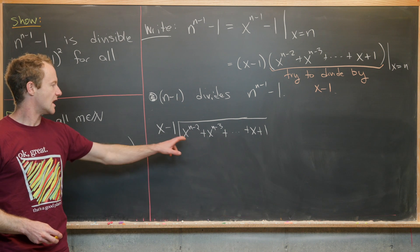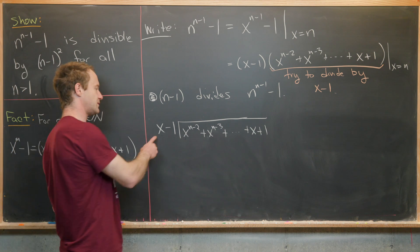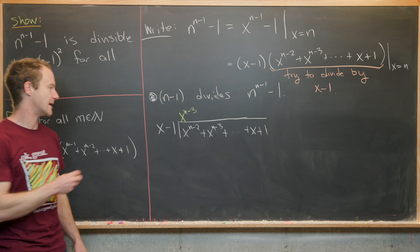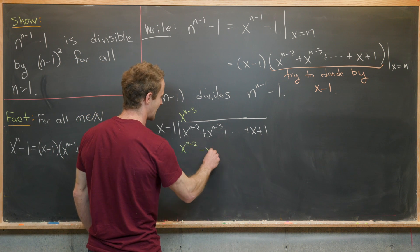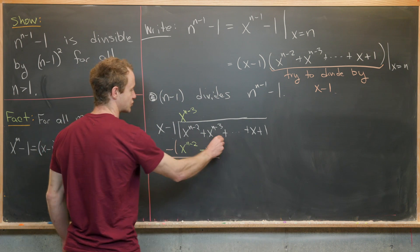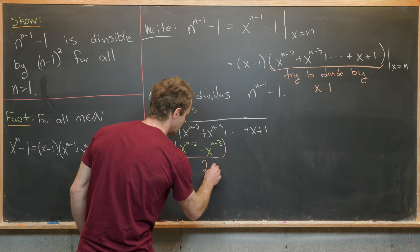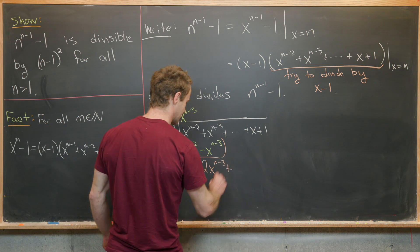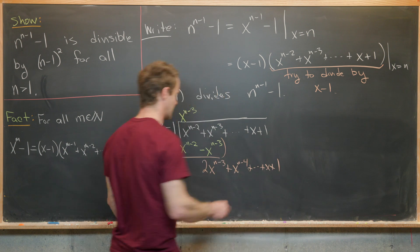To obtain an x to the n minus 2 term, we need to multiply x minus 1 by x to the n minus 3, giving x to the n minus 2 minus x to the n minus 3. Subtracting those terms off gives us 2x to the n minus 3, and then we bring everything else down: plus x to the n minus 4, all the way down to x plus 1.